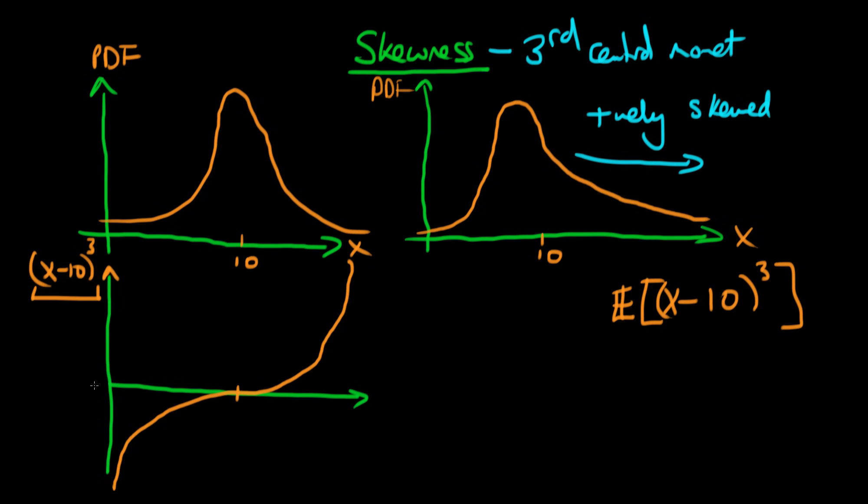It's not hard to see that the average value of y is just zero, so E[(X-μ)³] for a symmetric distribution is zero.